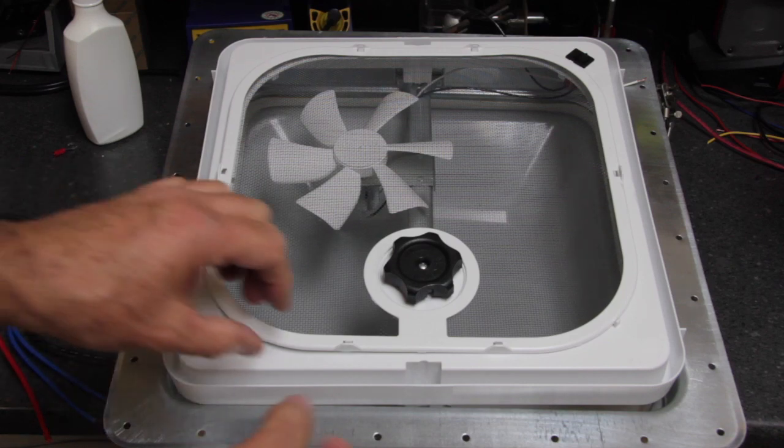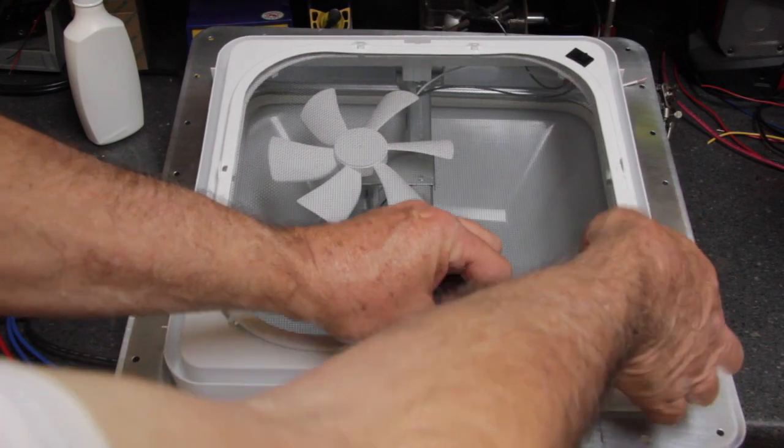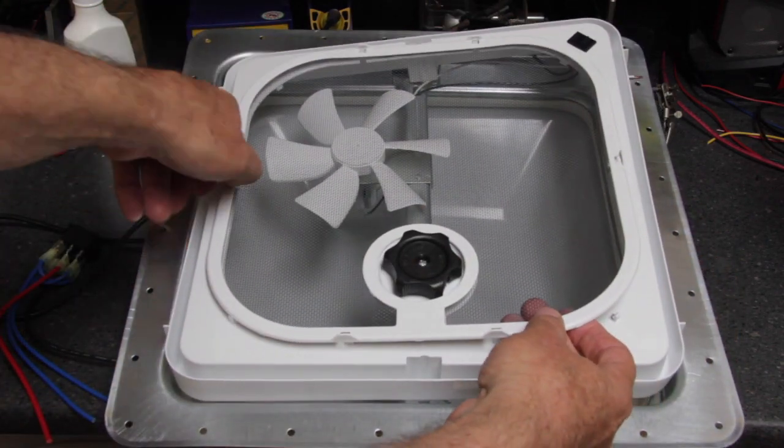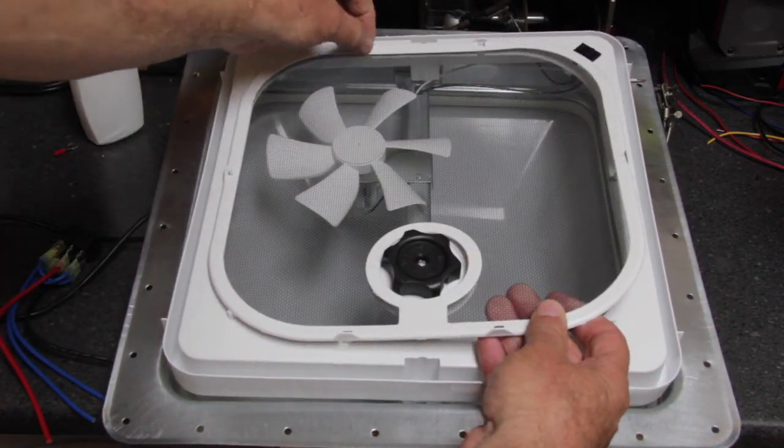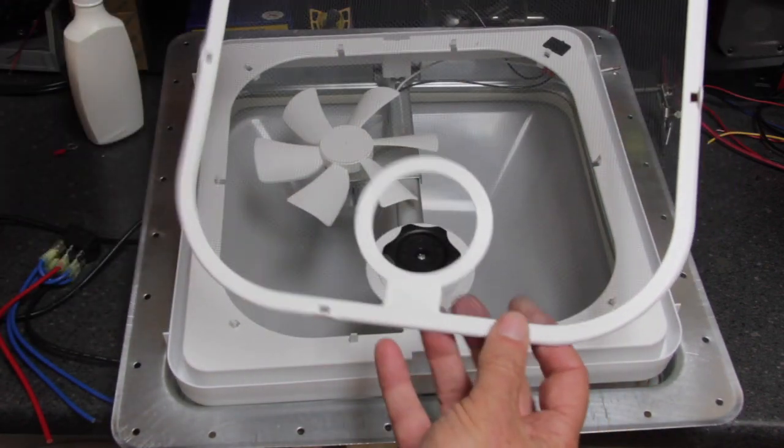First thing we're going to do is remove the inside screen. There's little tabs here and all we have to do is push the little tabs and then we can remove the inside screen.